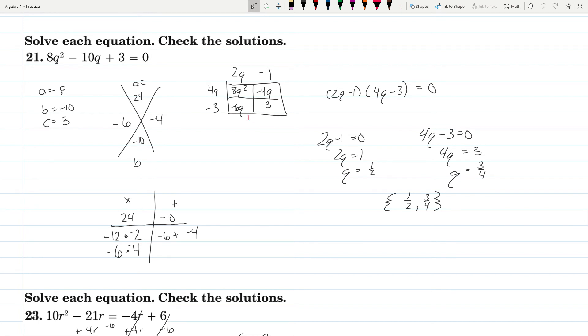So 8q squared, negative 6q, negative 4q and 3. Factor them out. You get 2q and a minus 1, you get 4q and a minus 3. So you get 2q minus 1 times 4q minus 3 equals 0. Those are the two pieces you're setting equal to 0. 2q minus 1 equals 0, add the 1, divide by 2. 4q minus 3 equals 0, add the 3, divide by 4. You get 1 half and 3 fourths.